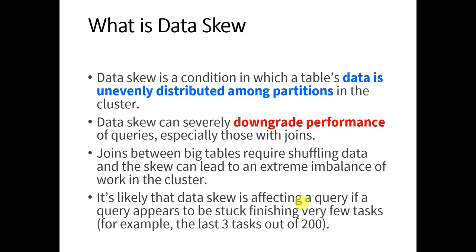As a result, while processing that particular partition by a core within an executor, it will take a long time compared to other partitions. The smaller partitions would be processed very quickly and the corresponding cores would sit idle, while the one core processing the bigger file keeps running for a longer duration. As a result, it impacts the overall execution time of that task, that stage, and ultimately the entire job.